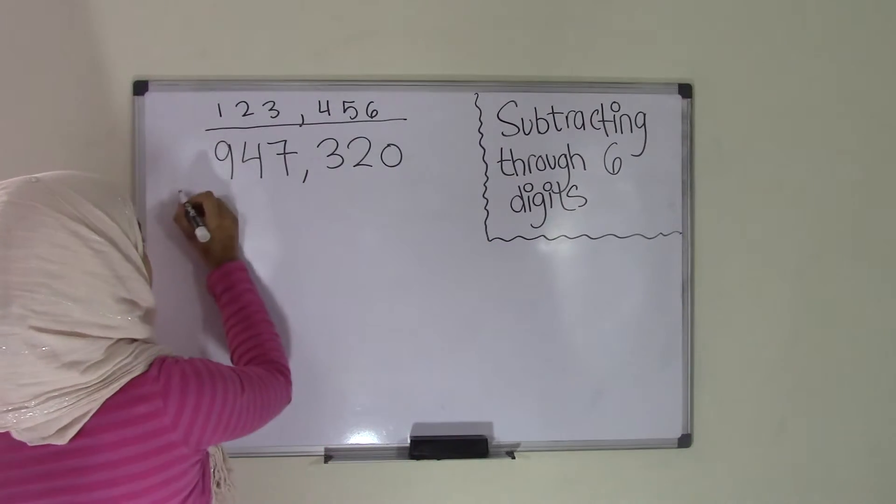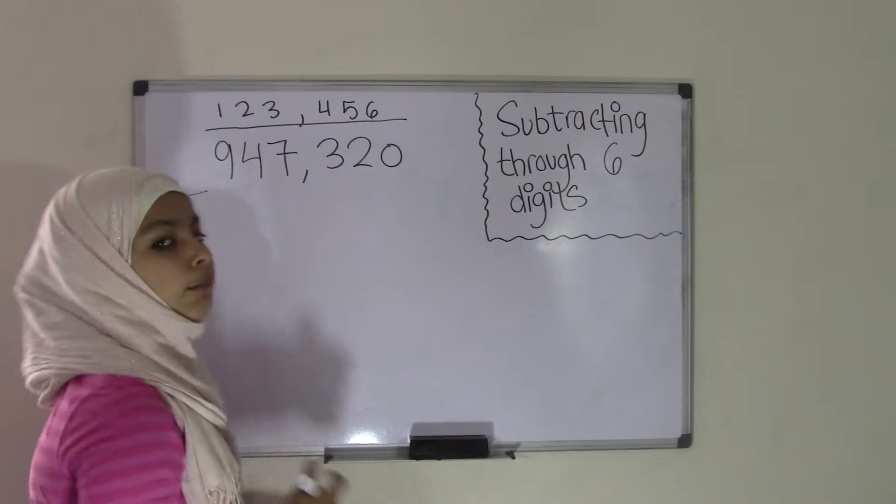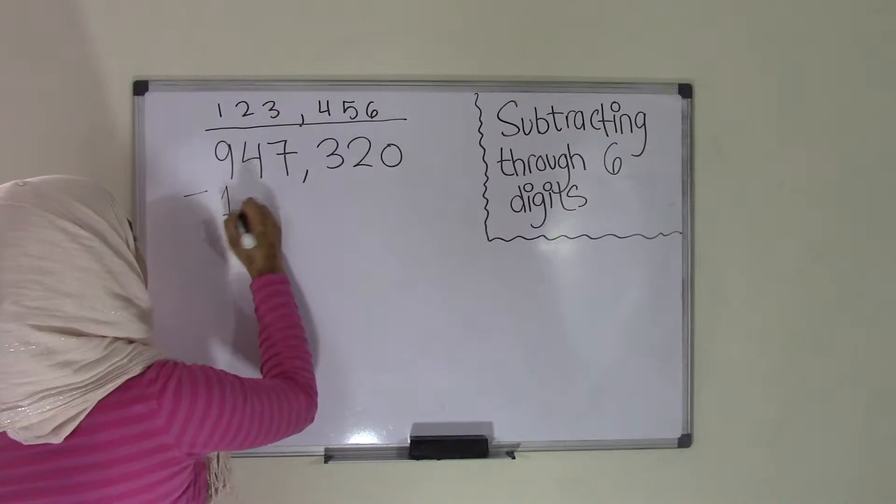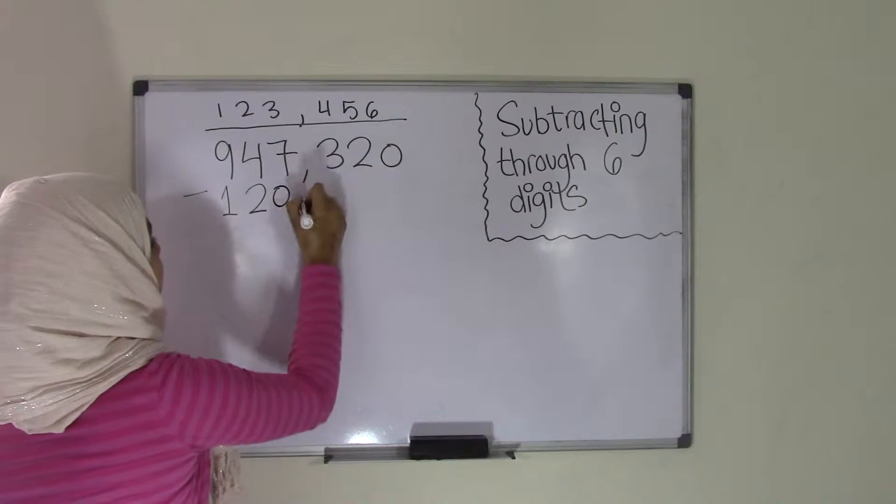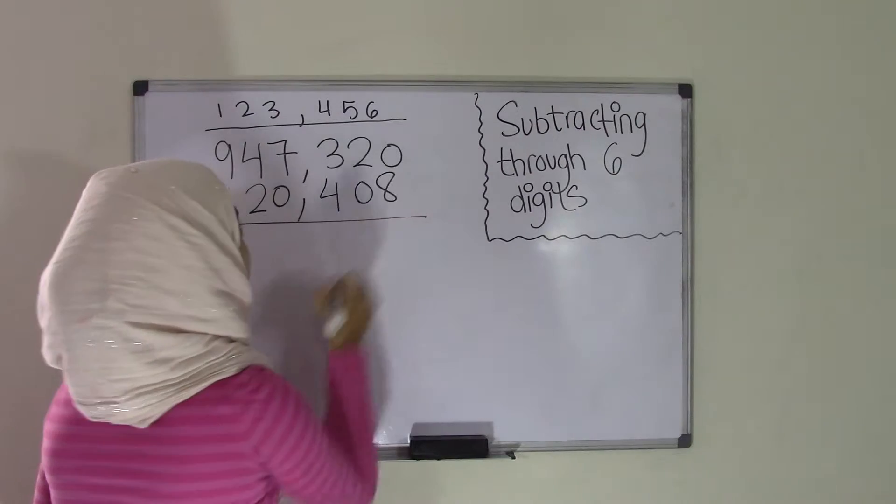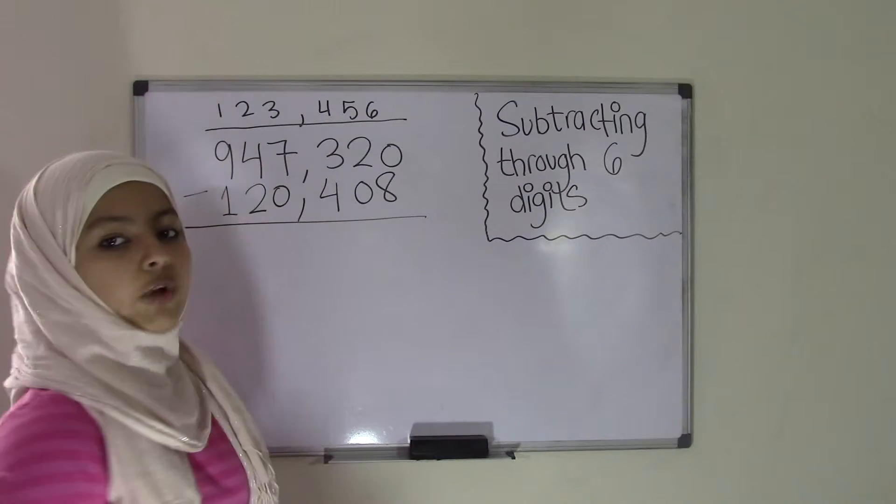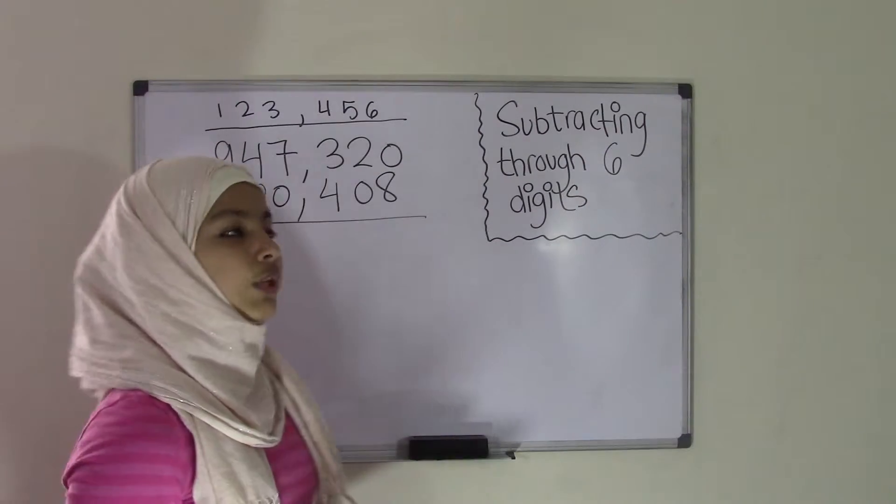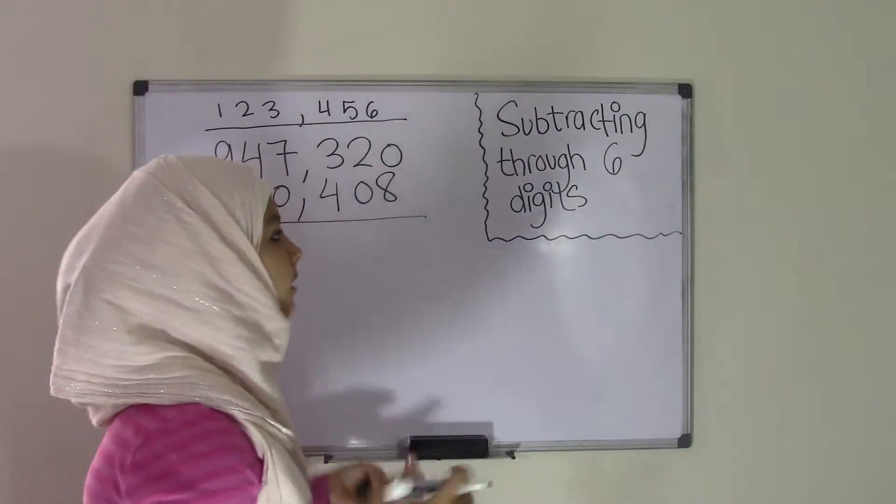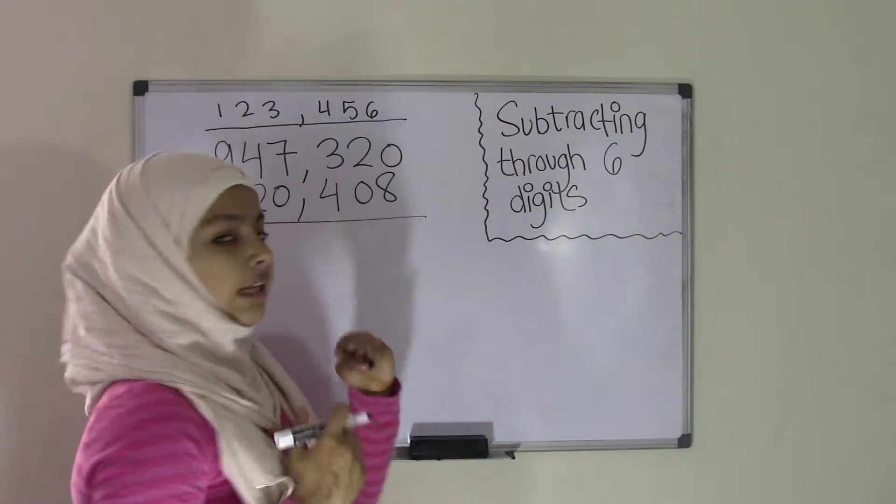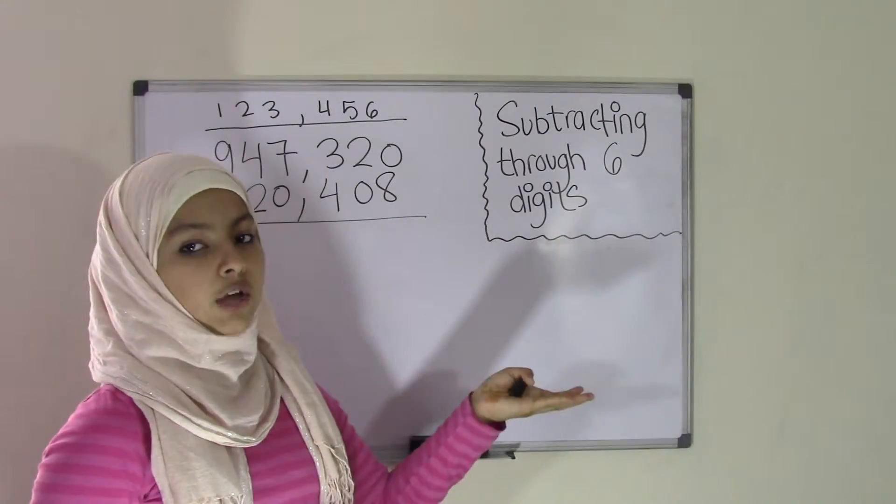And we're doing subtraction, so I'm going to put the minus sign and then I'm going to list my second six-digit number, which is 120,408. So that is my six-digit by six-digit subtraction problem. Now I know that these are big numbers, but this is really simple subtraction because of course you're going to be going from right to left and you're going to be subtracting the bottom number from the top number.